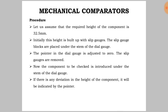For the procedure, let us assume that the required height of the component is 32.5 mm. Initially, this height is built up with slip gauges. The slip gauge blocks are placed under the stem of the dial gauge, and the pointer in the dial gauge is adjusted to zero. The slip gauges are then removed, and the component to be checked is introduced under the stem of the dial gauge. If there is any deviation in the height of the component, it will be indicated by the pointer.